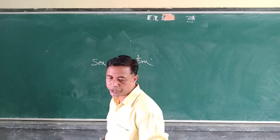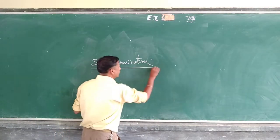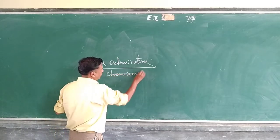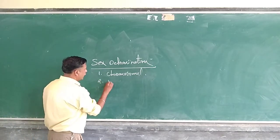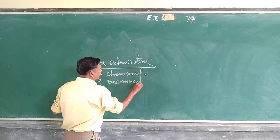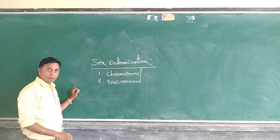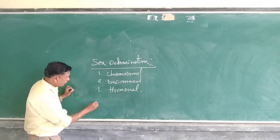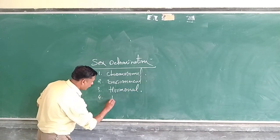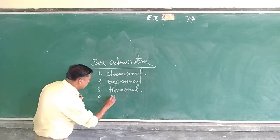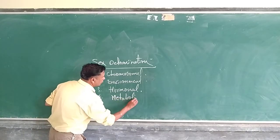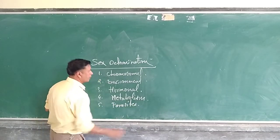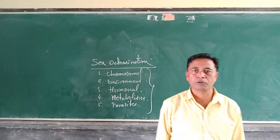Sex determination is done by the following factors. The first one is the chromosome factor, second one is the environment, third one is hormonal, fourth is the metabolism, and fifth is the plastic parasites. All these factors are responsible for the development of sex in different organisms.